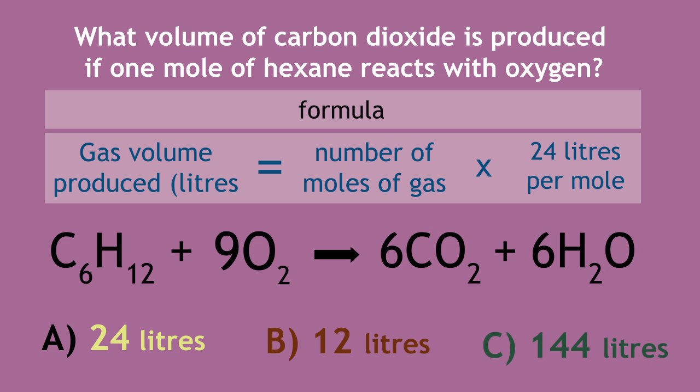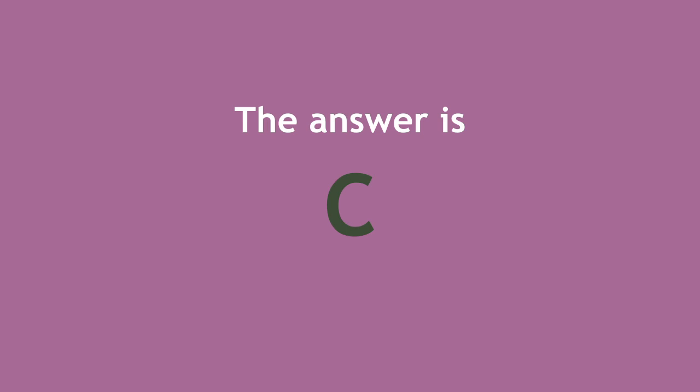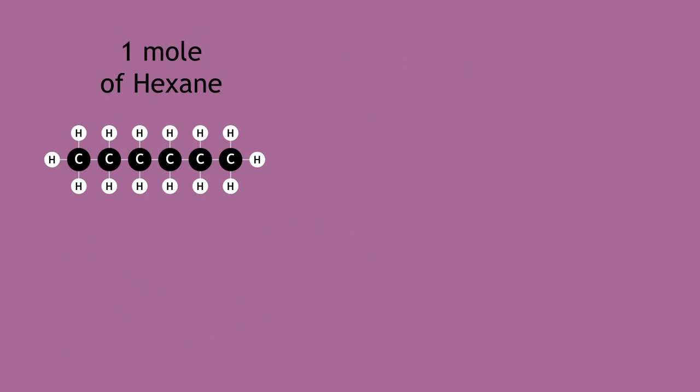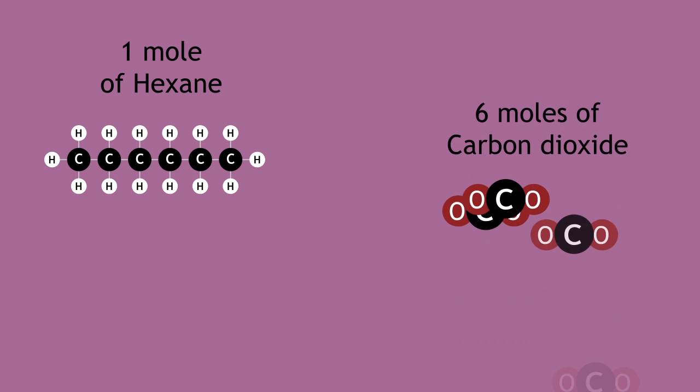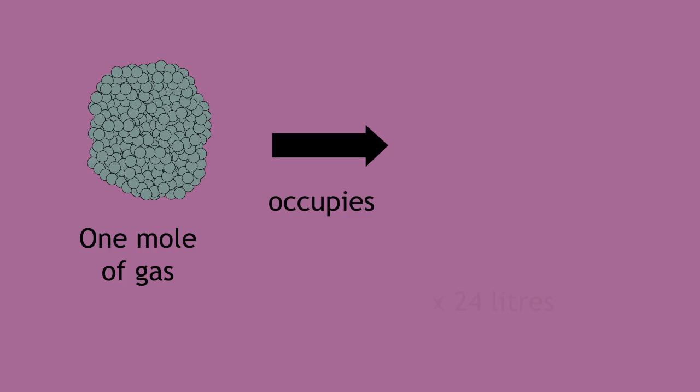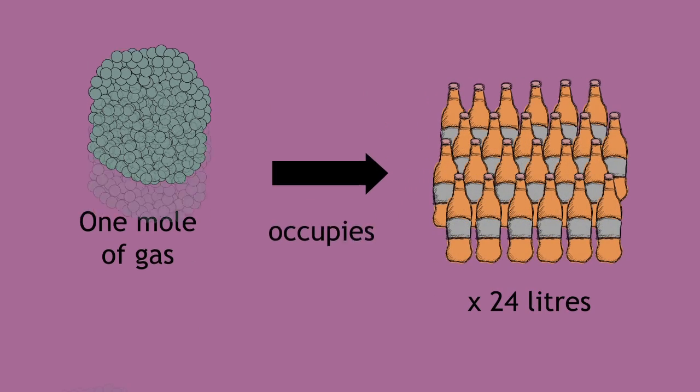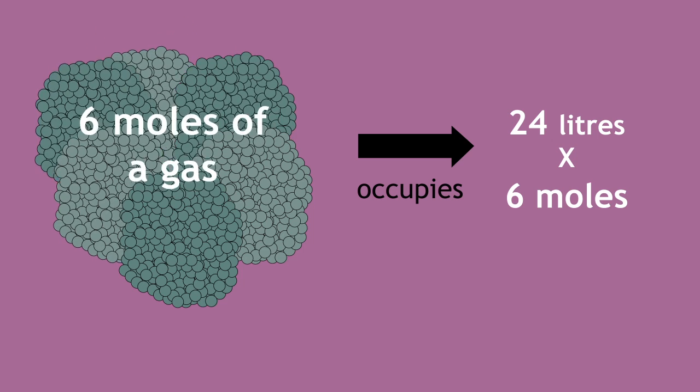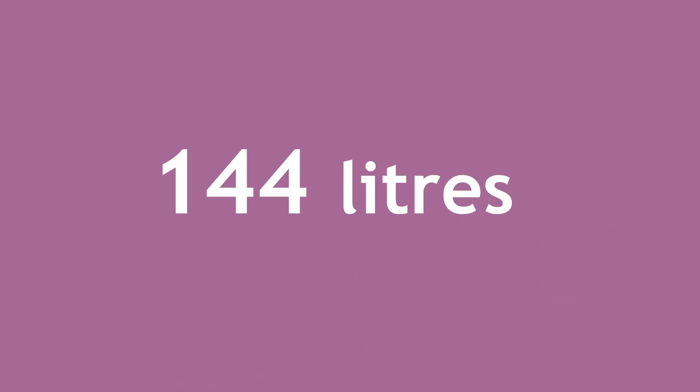Pause, use the formula and choose from one of the following volumes. Continue when you are ready. The answer is C, 144 litres. This is because one mole of hexane produces six moles of carbon dioxide. So, if one mole of a gas occupies 24 litres, then six moles of a gas occupy 24 litres times six, which is equal to 144 litres.